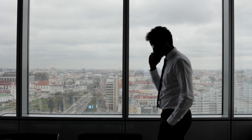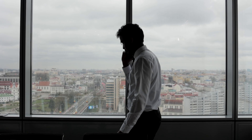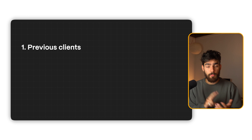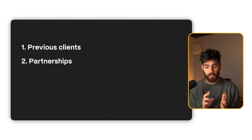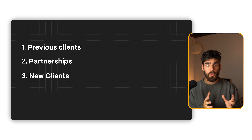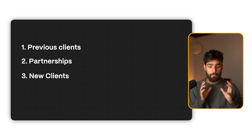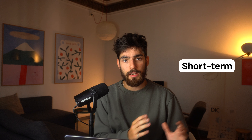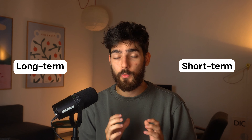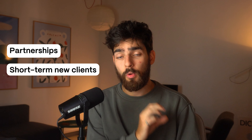So there are three main parts. Number one is previous clients — talk to your previous ones, say hey, we're available again for these new services, different systems, different processes. Make sure they think there's something new involved with hiring you again. Number two is partnerships. And number three is new clients, which we can split into two pots: short-term and long-term. Long-term is what really excites me, and that's what's going to be in the PDF.